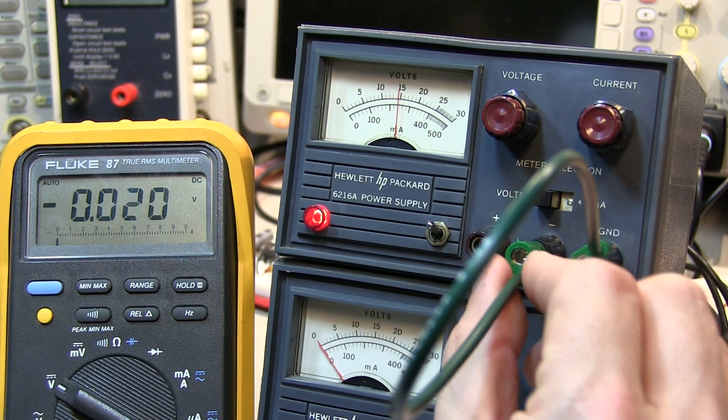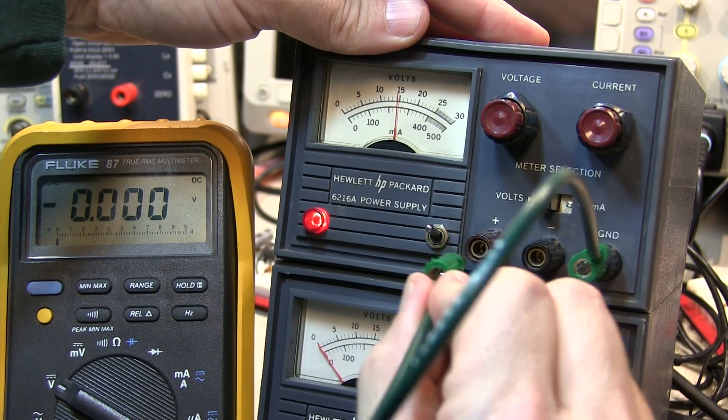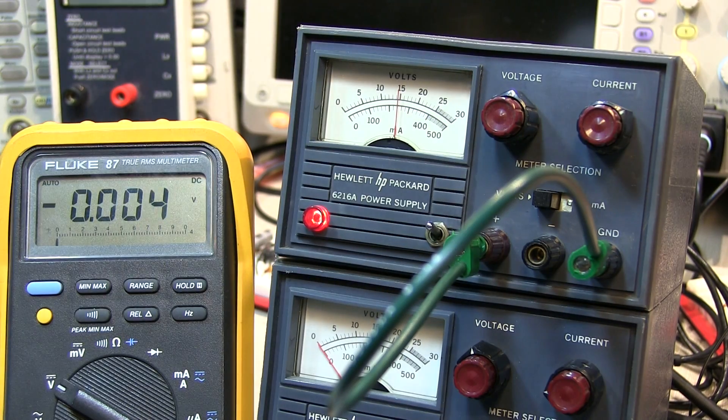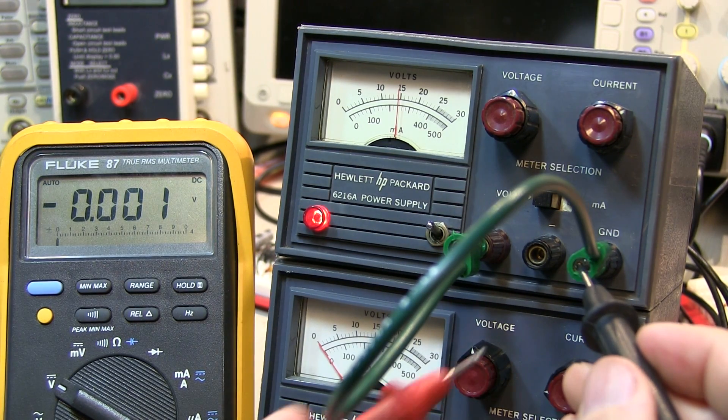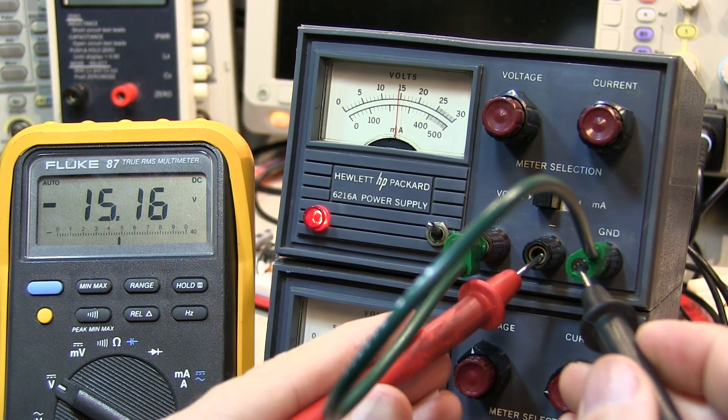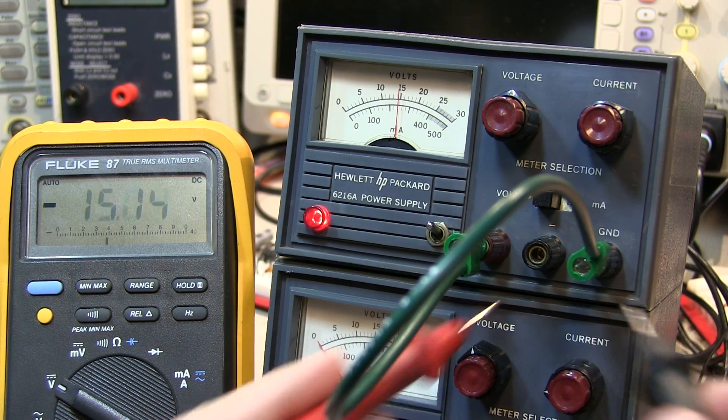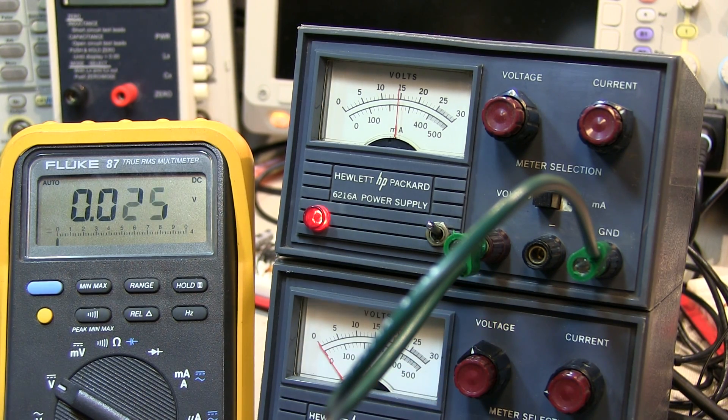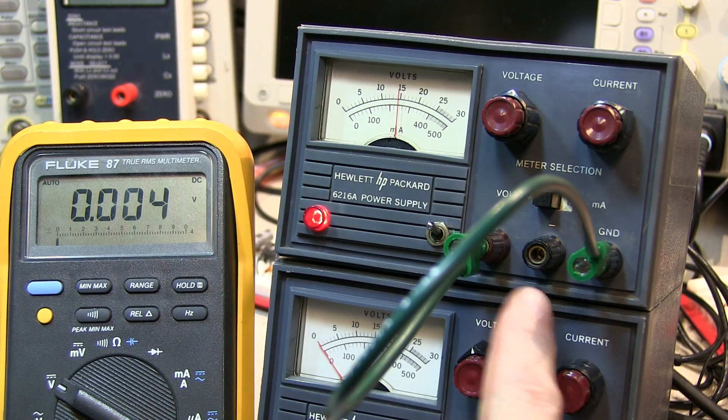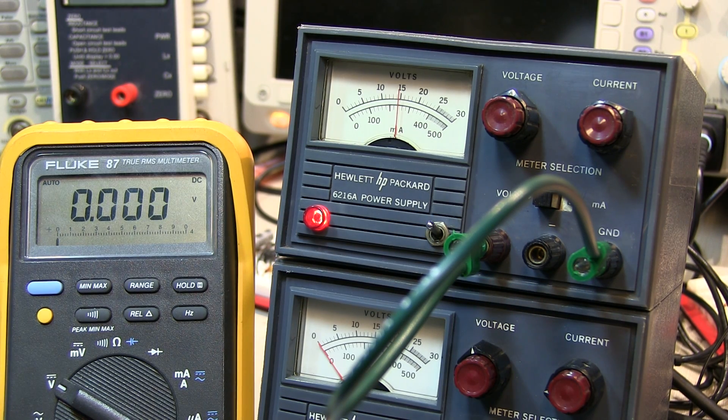If we simply move our ground reference to the positive output of the power supply, now with respect to ground, the output is minus 15 volts. So with the same single 15 volt power supply, or whatever we adjusted it to, we can get a positive or a negative voltage output.